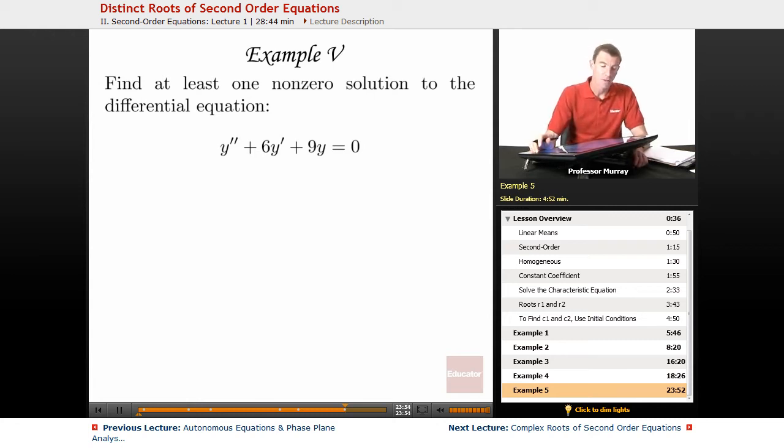So in our last example here, we have to find at least one non-zero solution to the differential equation y double prime plus 6y prime plus 9y is equal to zero.